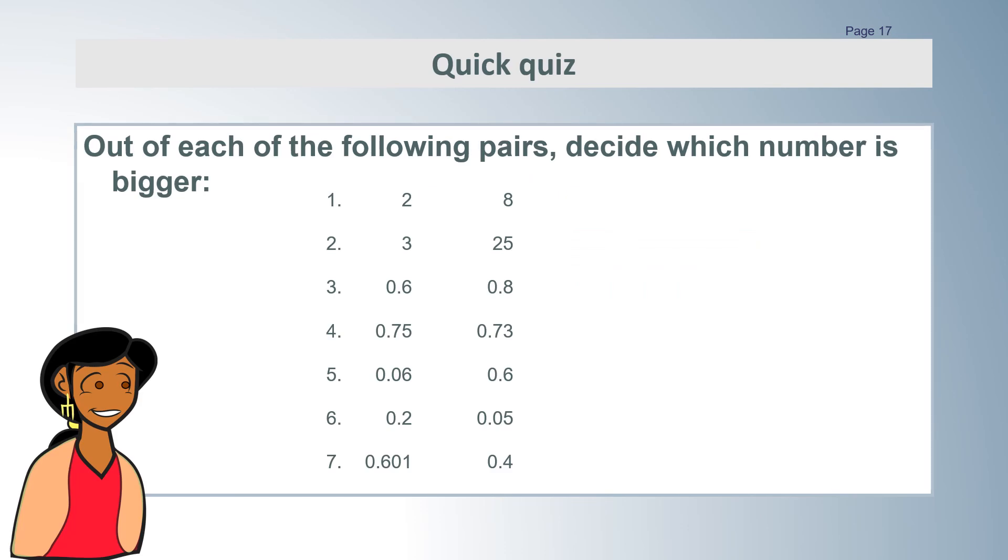You might like to try this quiz now to practice what you have learned. Jot down the larger number for each of these pairs of numbers. Pause the video until you have answered it. The numbers are 2 and 8, 3 and 25, 0.6 and 0.8, 0.75 and 0.73, 0.06 and 0.6, 0.2 and 0.05, 0.601 and 0.4.